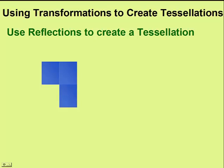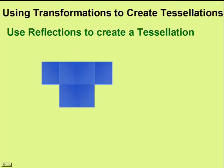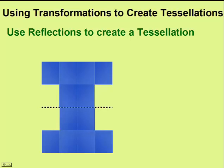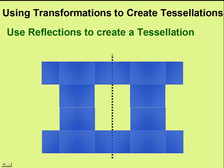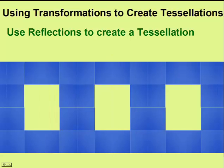Next, we'll use a reflection to create a tessellation. We'll start with this L-shape and flip it over a vertical axis to create a new object. We can then take this object and reflect it over a horizontal axis, and we can carry this on — drawing an axis, flipping the shape over that axis — and continue this process.